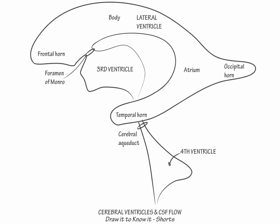Show that the aqueduct of Silvius empties into the diamond-shaped fourth ventricle, and that the fourth ventricle empties into the central canal of the spinal cord. Choroid plexus is the highly vascularized secretory epithelial tissue that produces CSF. It lies within the central regions of the cerebral ventricles — in the body and atrium of the lateral ventricle, the temporal horn of the lateral ventricle, and the third and fourth ventricles.